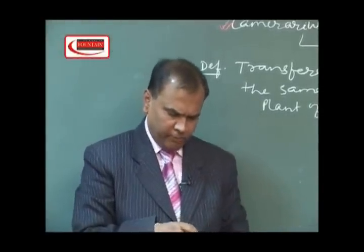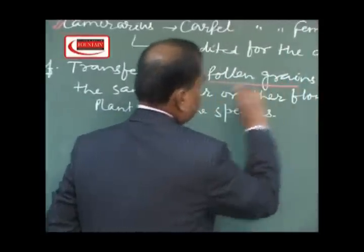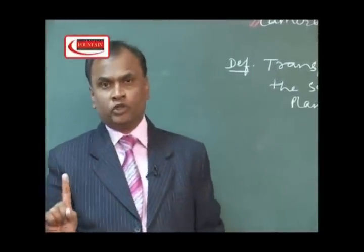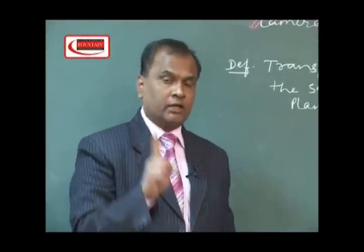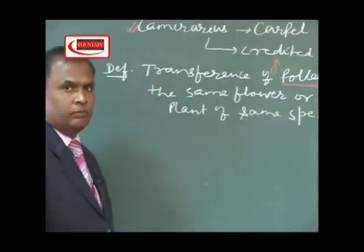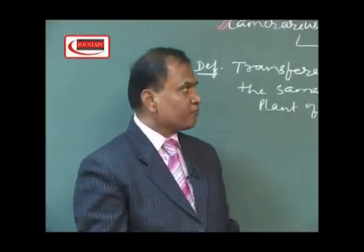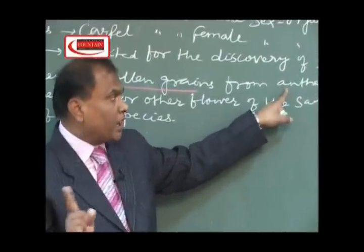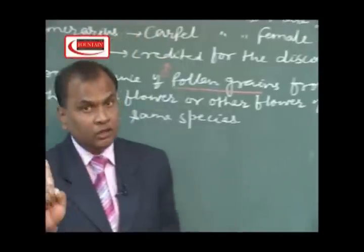In pollination, always the transference of pollen grains occurs — never the transference of the embryo sac. During pollination, pollen grains get transferred, and pollen grains contain the male gametes. This arrow shows the direction of movement of the pollen grains — from the anther, because pollen grains are produced inside the anther, to the receptive stigma. Before pollination, the stigma should be receptive.